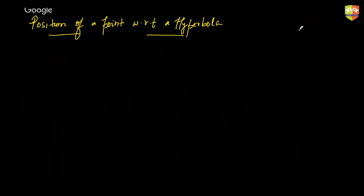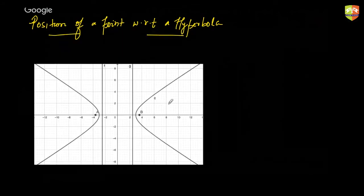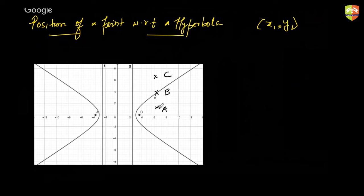Next concept: position of a point with respect to a hyperbola. A point can be in three positions — inside the arms, on the hyperbola, or outside. For point (x1, y1): if x1²/a² − y1²/b² − 1 > 0, the point is inside the arms (position a). If it equals 0, the point is on the hyperbola.